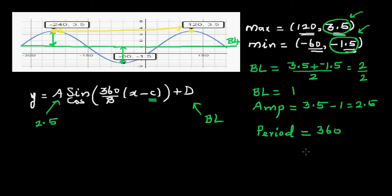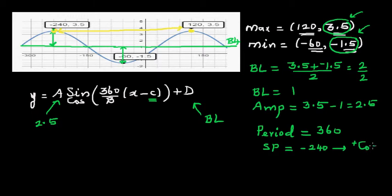For the starting point, you can take any point. If the starting point is at −240 and you have the maximum there, it's a positive cosine graph. If the starting point is at −60 where you're at the minimum, that is the same as a negative cosine graph.